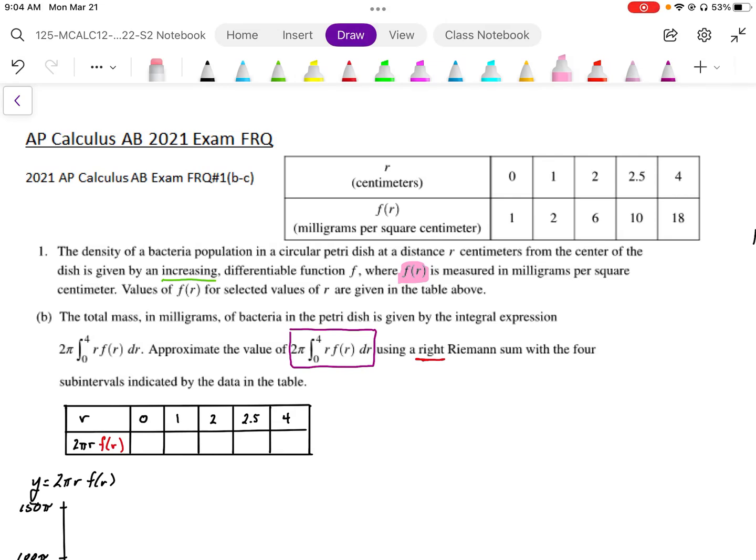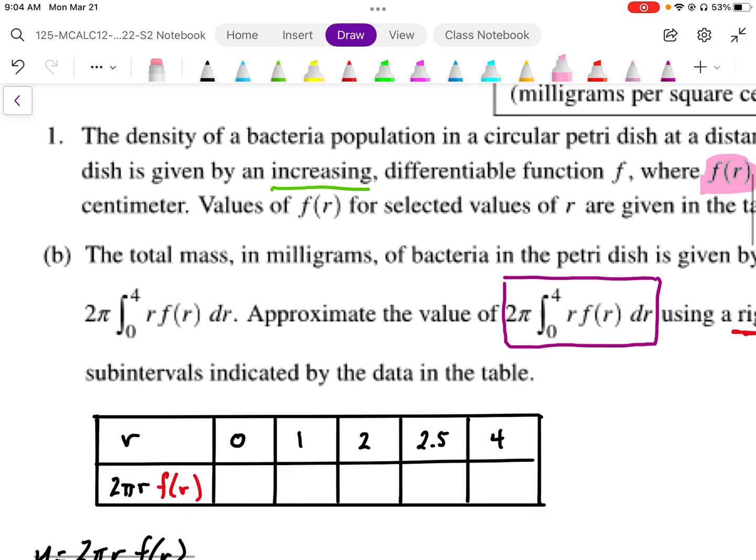1b from the free response section gives us the information of density of bacteria in a table and we're being asked to find the total mass in milligrams of bacteria in the petri dish given by the integral expression 2π of the integral from 0 to 4 of r f(r) dr.